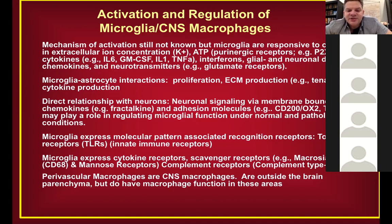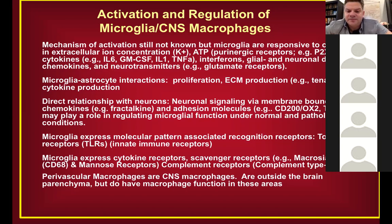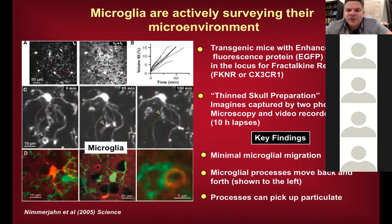Perivascular and sinus macrophages are outside the brain parenchyma but do have macrophage function in those areas. They are cousins of microglia but don't function exactly the same and are not in the same location — they're in distinct areas within the brain.